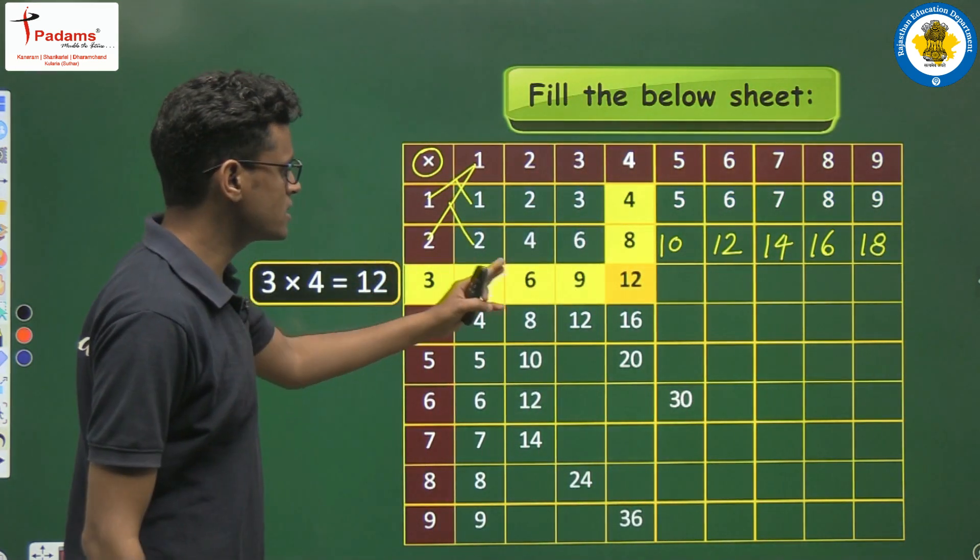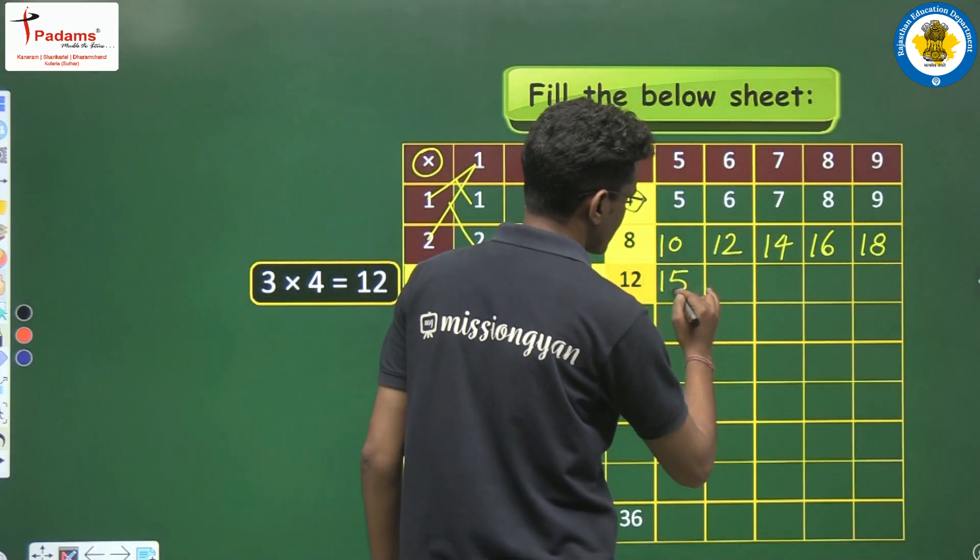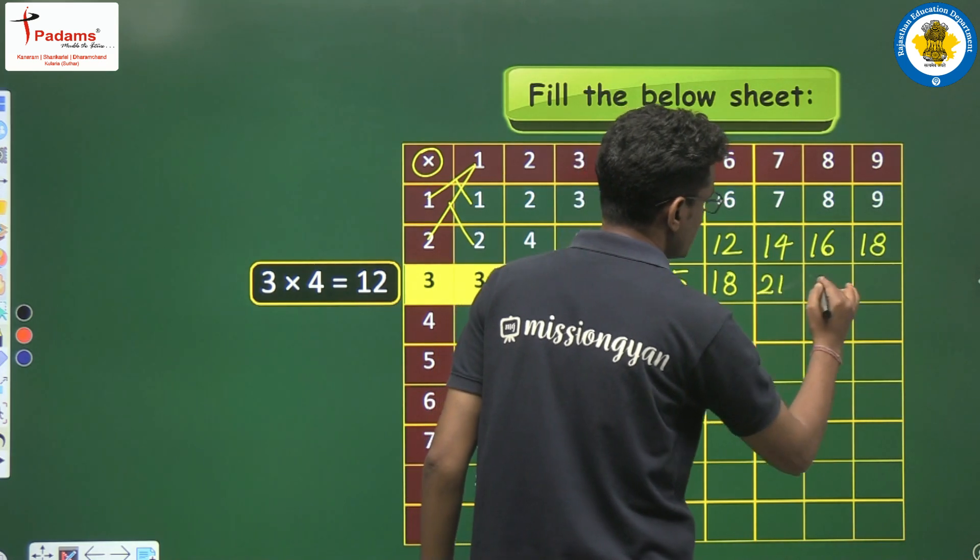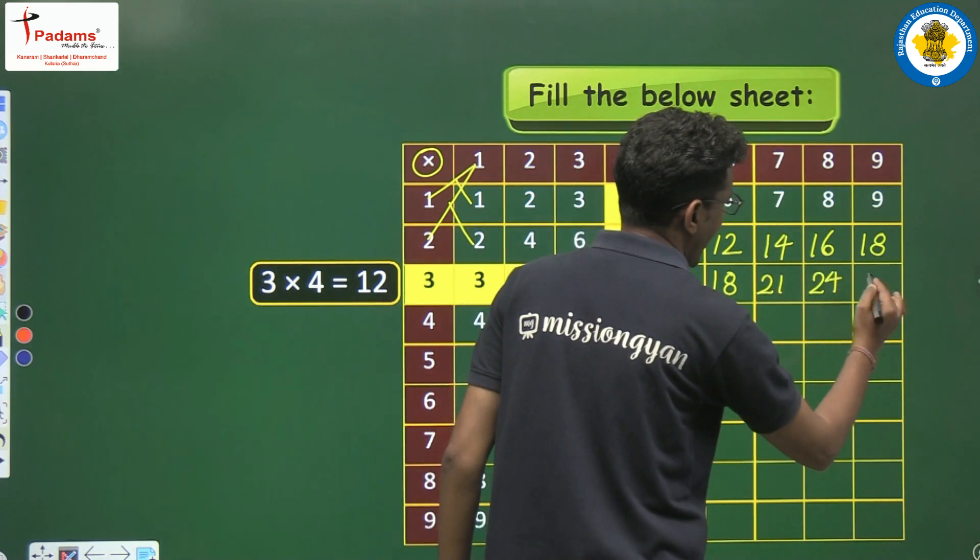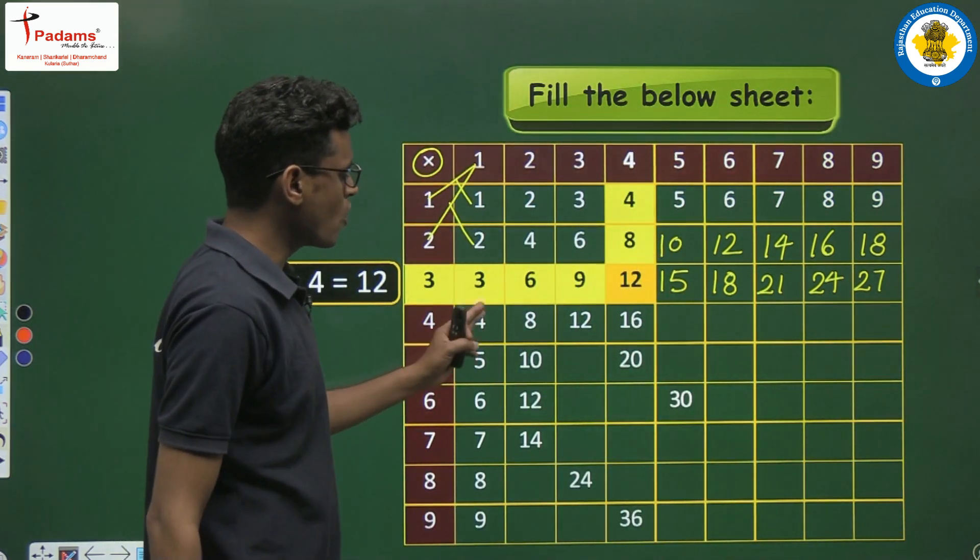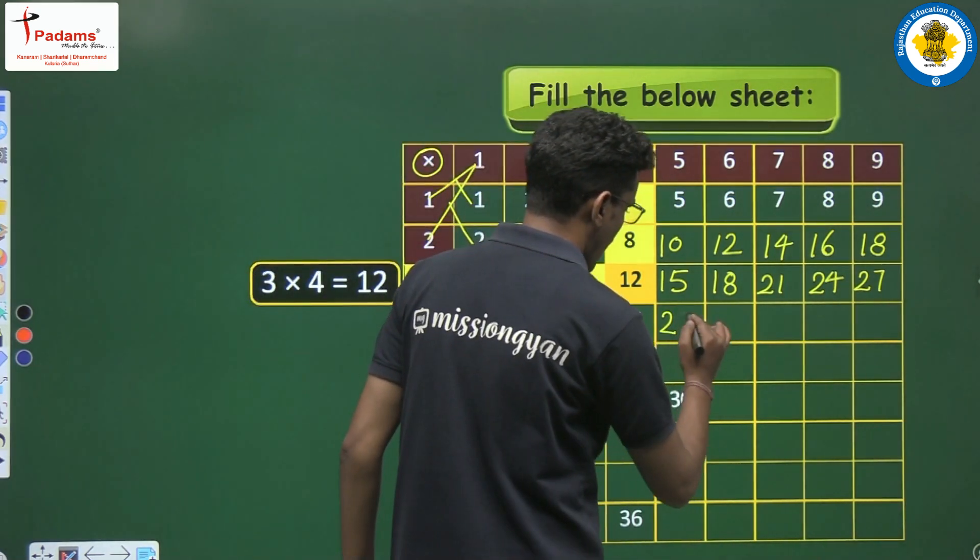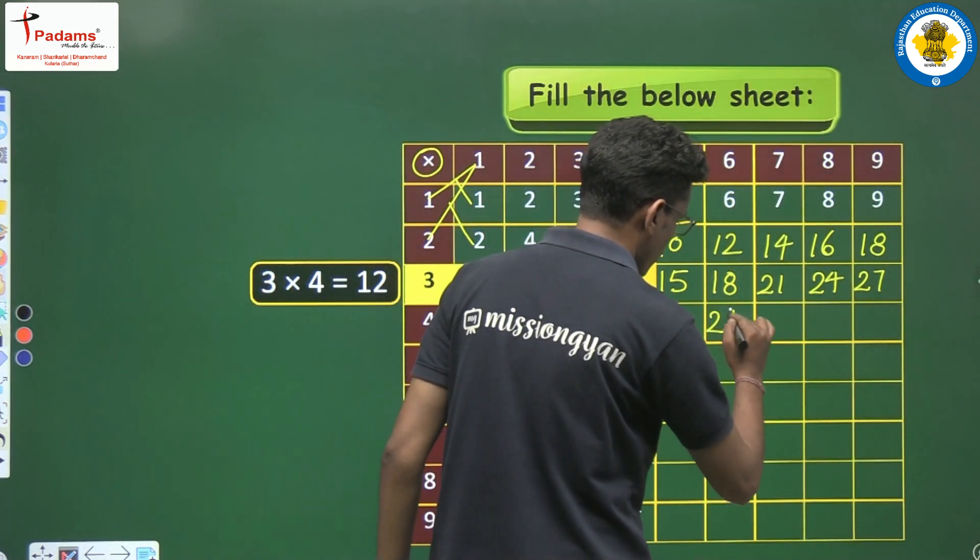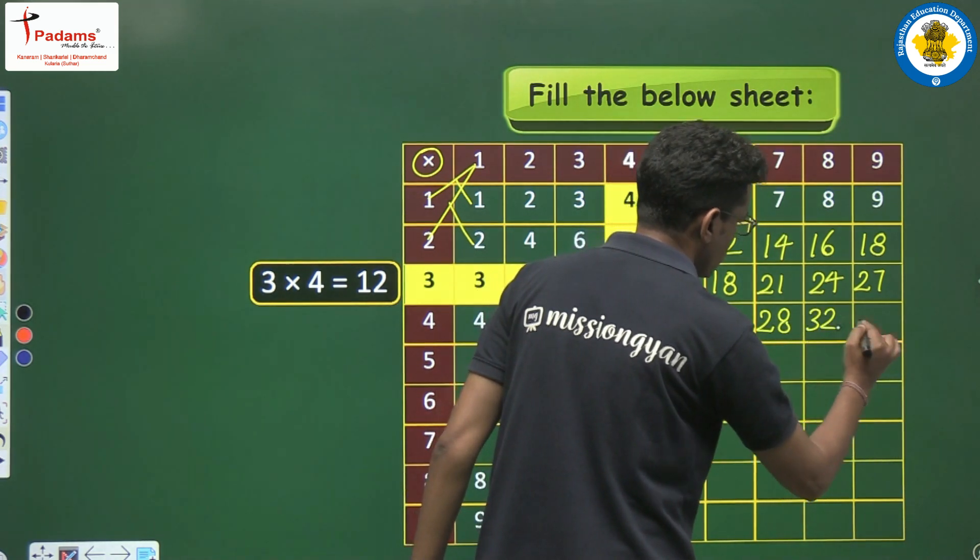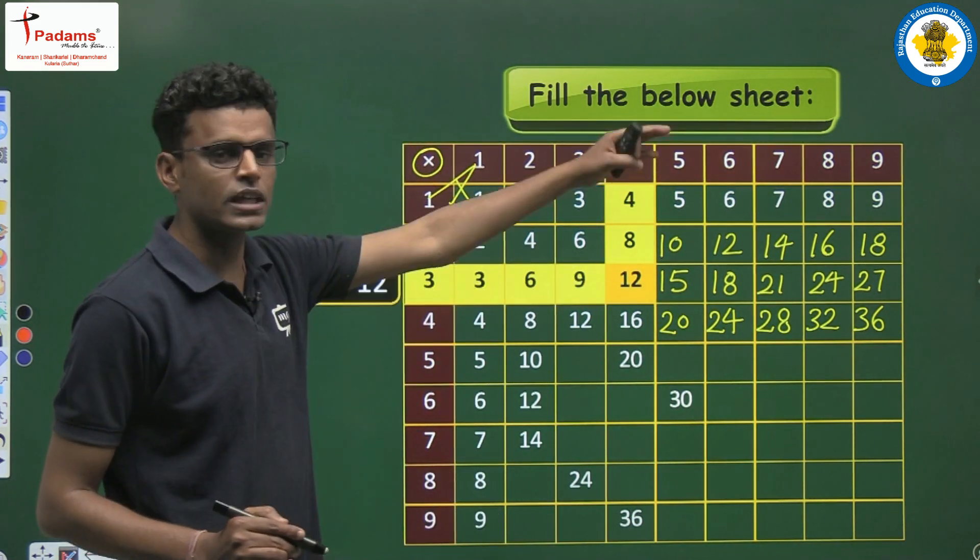Next is the 3 table: 3, 6, 9, 12, then 3 more is 15, after that 18, then 21, 24 and at last we have 27, clear? Now the 4 table: 4, 8, 12, 16, then we have 20, after 20 we have 24, then 28 and another will be 32 and at last at 9 times we have 36, okay? 4 times 9 is 36.